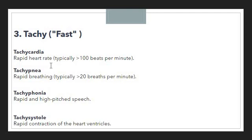If someone's heart is beating greater than 100 beats per minute, that condition is called tachycardia. Similarly, we have 'tachypnea,' which means rapid breathing, typically greater than 20 breaths per minute. If someone is taking more than 20 breaths per minute, that condition is called tachypnea.